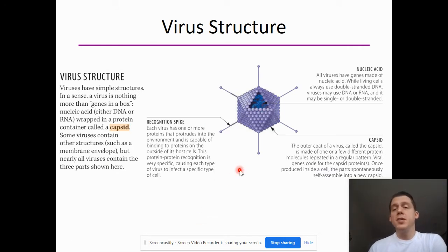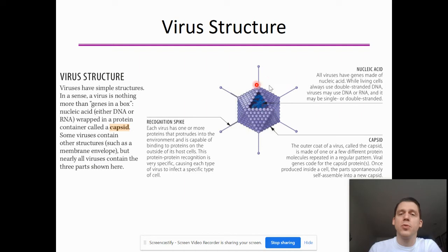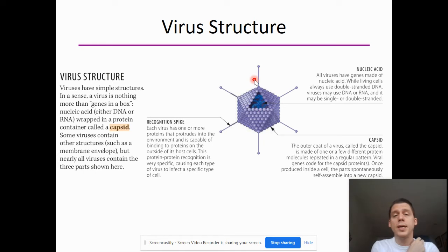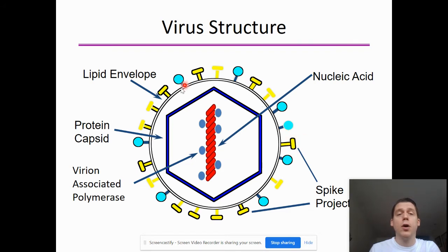The structure of a virus is pretty simple. There is genetic material in the middle, surrounded by a capsid, which is basically a protein coat. There are also recognition spikes — our immune system can recognize these spikes to help fight viruses off, and viruses can use these spikes to trick cells into letting them in. Some viruses also have a lipid envelope, similar to the bilayer seen on prokaryotes or eukaryotes, with the spikes coming off that lipid envelope.